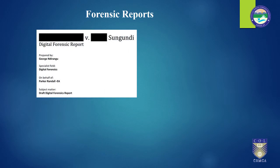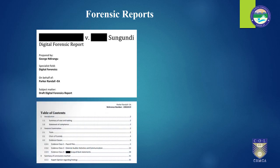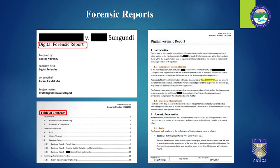Looking at another example of a digital forensic report — X versus Y — prepared by someone, including the investigator's name, their field, their specialist area, on behalf of whom, and what it is all about. Then you have the table of contents, which would include the introduction, the summary of the case, the statement of compliance, the forensic examination, what tools were used, chain of custody, evidences — evidence one, evidence two — categorized, a summary of conclusions. All these things are clearly categorized and identified. The body of the report has an introduction with a summary of the case and the task, the statement of compliance, and the forensic examination that has been done.